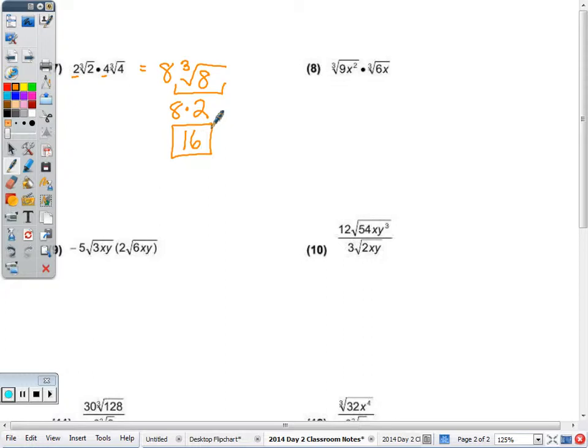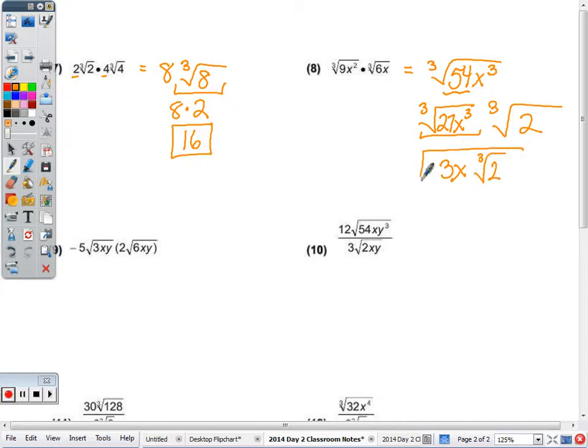No coefficients, so multiplying the radicands. 9 times 6 is 54. x squared times x is x cubed. Breaking it down, perfect cube, non-perfect cube. Largest perfect cube factor of 54 is 27. x cubed is a perfect cube, and it's 27 times 2. Cube root of 27x cubed is 3x, and I'm going to bring down the cube root of 2.